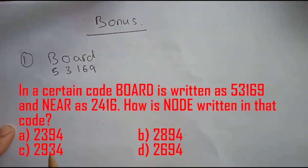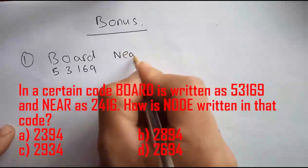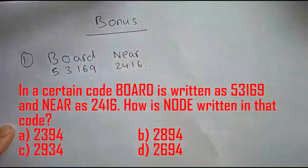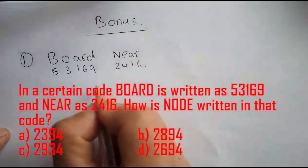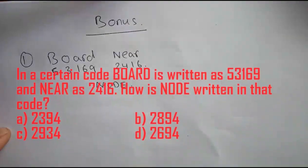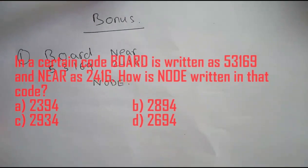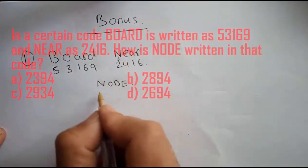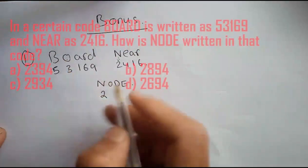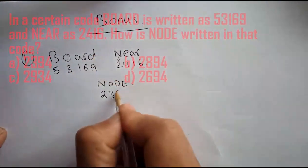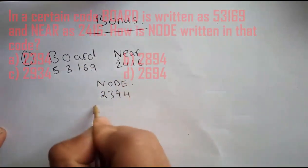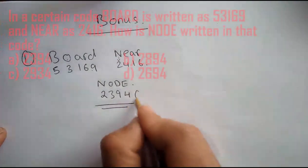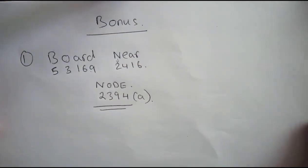How is NODE coded? It's very simple - each letter is represented by a number. N is represented by two, O by three, D by nine, and E by four. So the correct option is two-three-nine-four, which is option A.